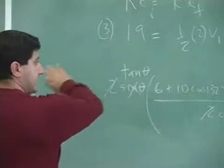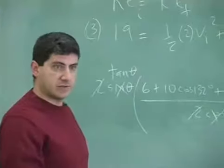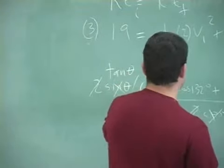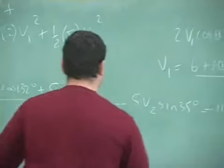I could have V2 on one side and everything else on the other side, right? I could rearrange it that way. So I could multiply this thing by the tangent theta, take it to the other side.